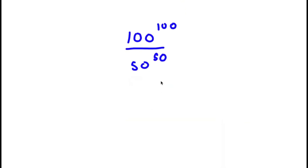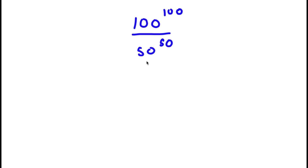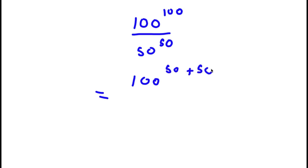So in this problem, I have 100 to the power of 100 over 50 to the power of 50. Now, 100 is the same thing as 50 plus 50, so I'm going to rewrite this as 100 to the power of 50 plus 50, all over 50 to the power of 50.